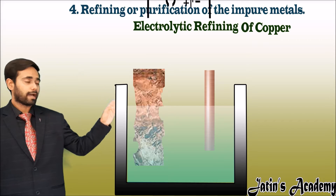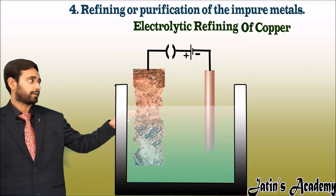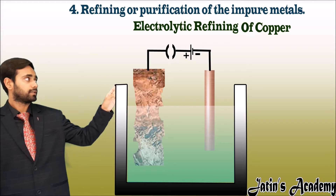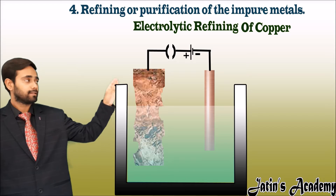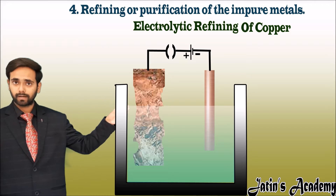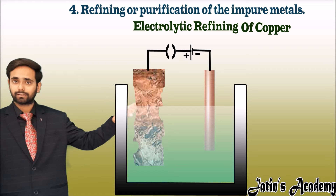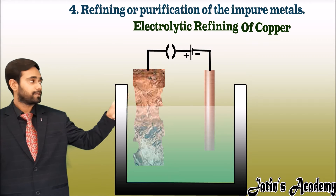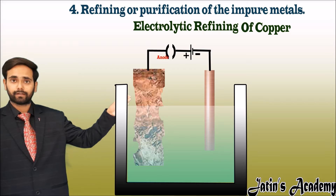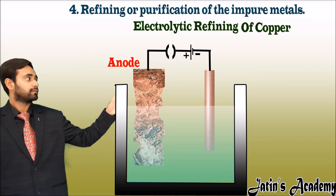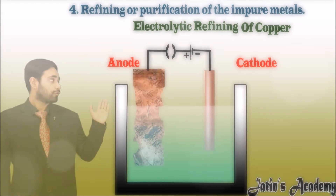Now attach the battery to the copper metal. Note that the positive terminal of the battery is attached to the impure metal, and the negative terminal of the battery is attached to the pure metal. This means the impure metal is the anode and the negative terminal is connected to the cathode, which is the pure metal.